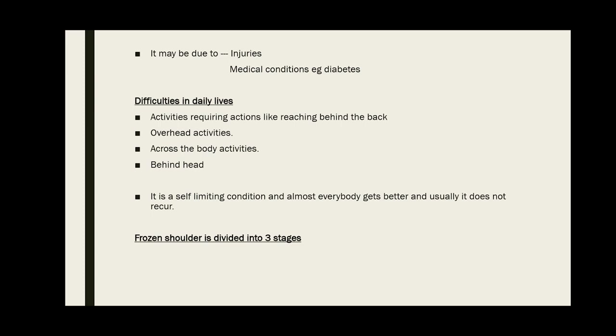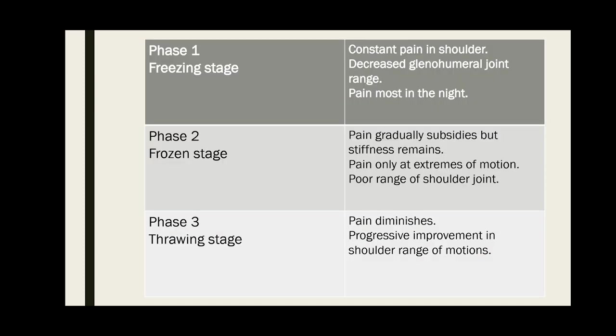Adhesive capsulitis is divided into three stages: stage 1 is the freezing stage, stage 2 is the frozen stage, and stage 3 is the thawing stage. Before stage 1, there is a pre-freezing stage in which the patient describes sharp pain at the end range of motion, achy pain at rest with sleep disturbances, but there is no range of motion restriction.